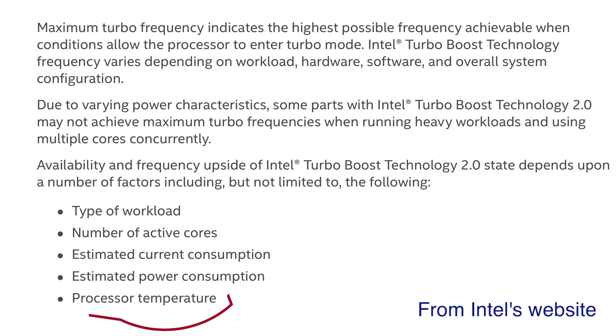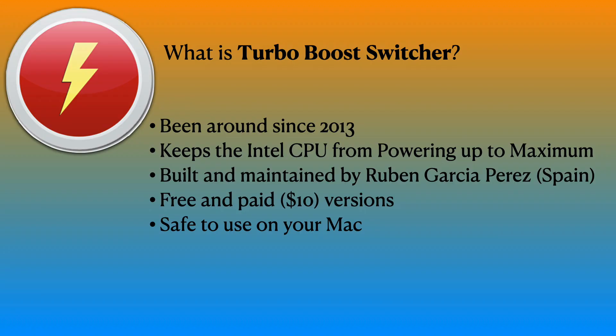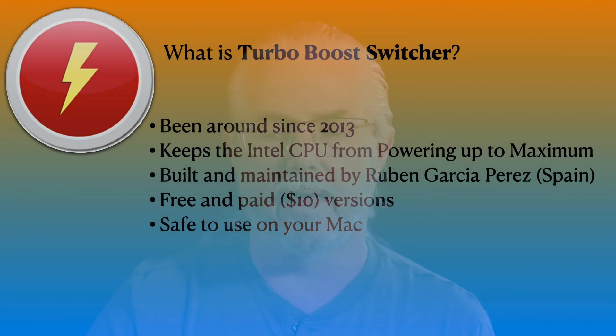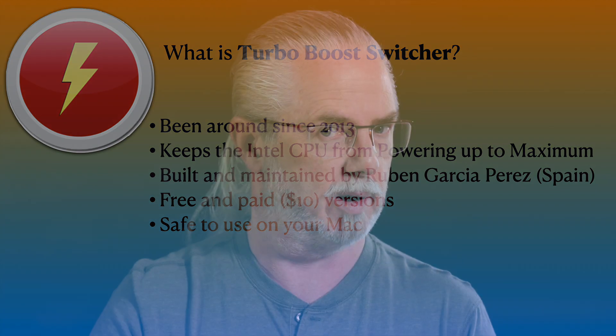The utility Turbo Boost Switcher addresses exactly this point. Your Intel processor is going into overdrive to process video, do recordings, and show you all the information panels that Ecamm Live gives you when you're streaming. Turbo Boost Switcher deals with lowering the speed of the processor to keep the heat from being generated and keep the fans from coming on. It's been around since 2013, invented by Ruben Garcia Perez — hats off to you, Ruben. There's a free version where you manually turn Turbo Boost on and off, and a paid version for only $10 that lets you set up rules, for example: if I'm running Ecamm Live, keep the Turbo Boost of my Intel processor off.